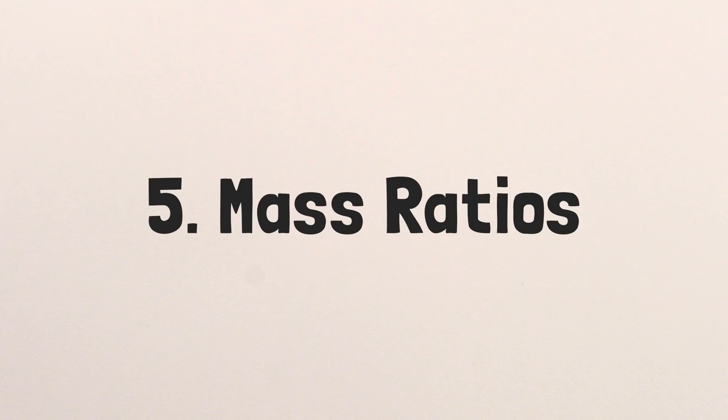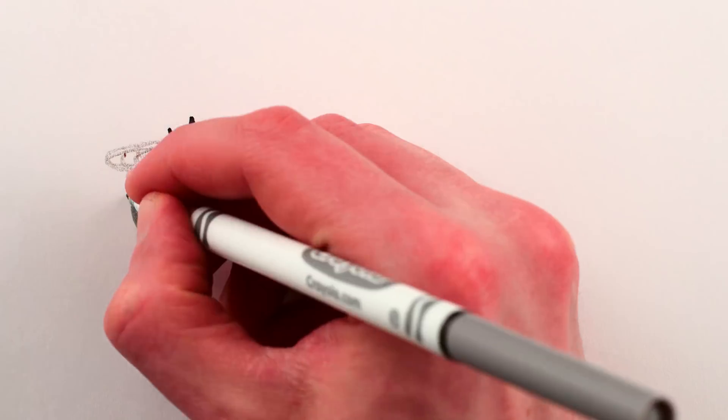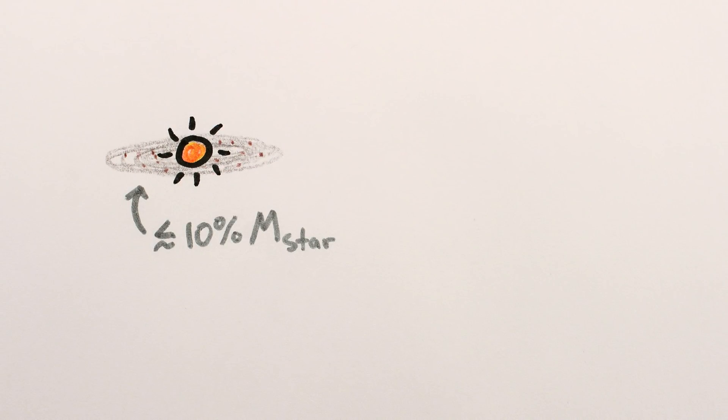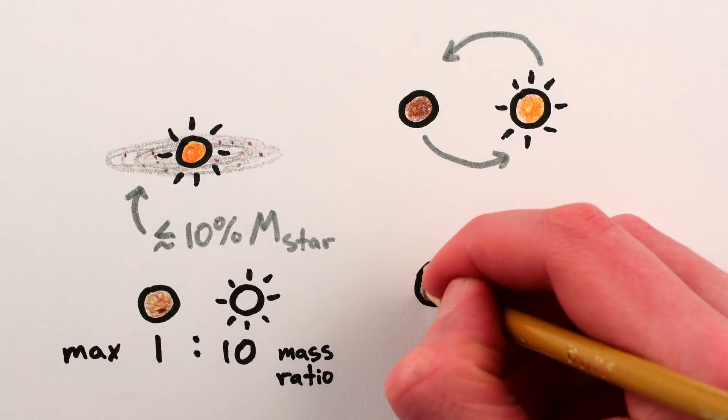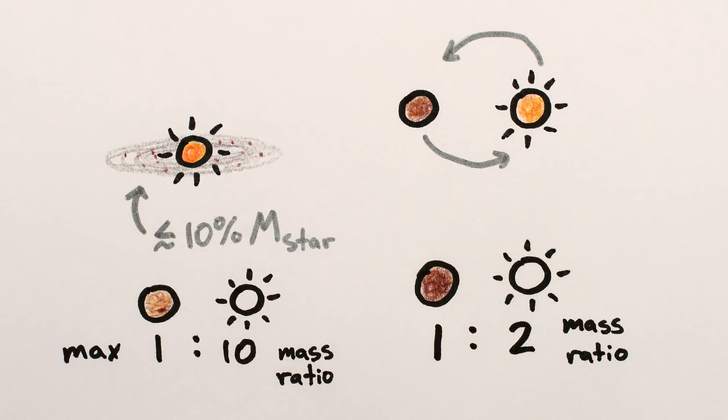5. Mass ratio. Protoplanetary disks are pretty much never more than 10% of the mass of their parent star, so a planet-to-star mass ratio is almost always less than 1 to 10. However, brown dwarfs and stars regularly orbit in pairs, with mass ratios much closer to 1 to 1.